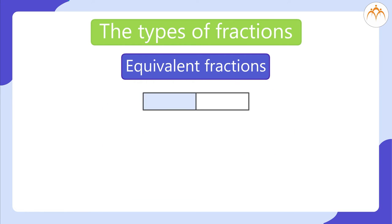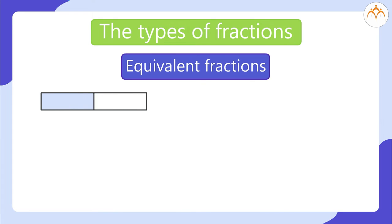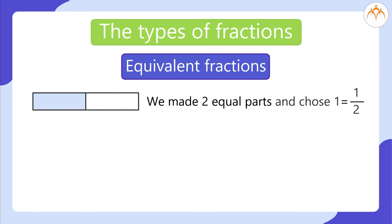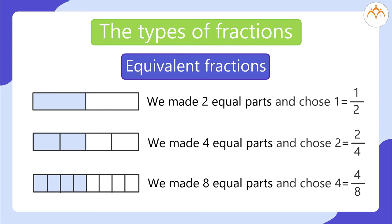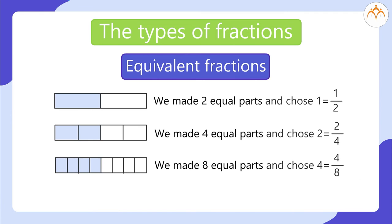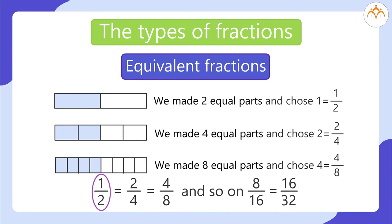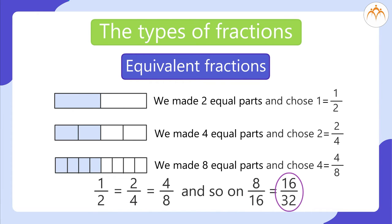Looking at the figure: we made 2 equal parts and chose 1 (1/2); we made 4 equal parts and chose 2 (2/4); we made 8 equal parts and chose 4 (4/8). We observe that 1/2 = 2/4 = 4/8, and further: 8/16 = 16/32 and so on.